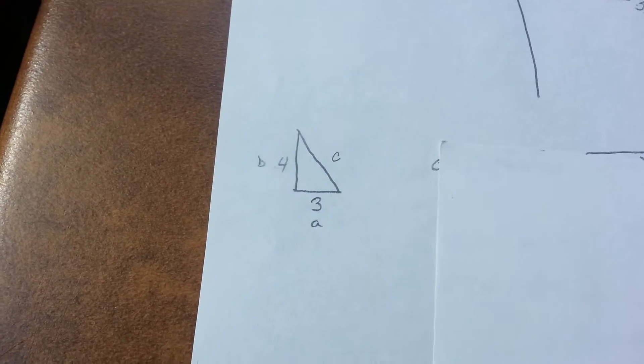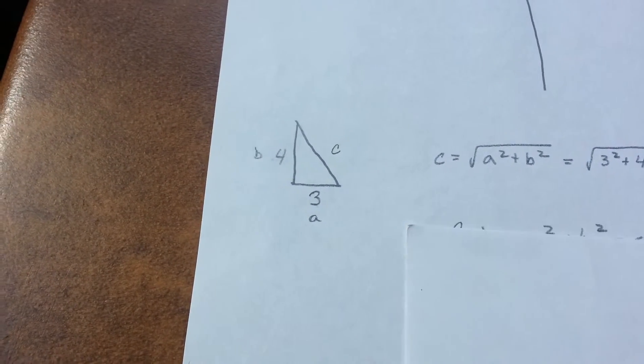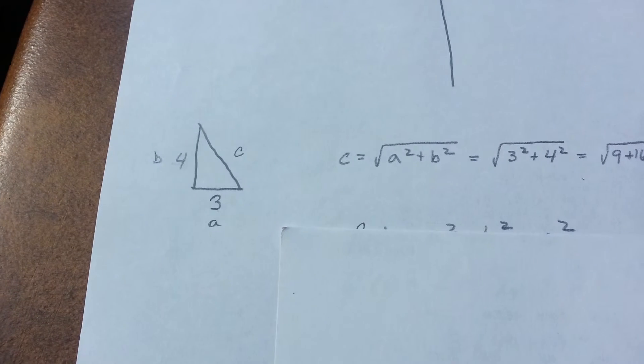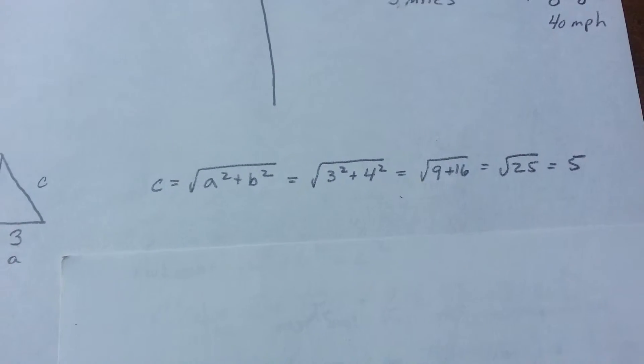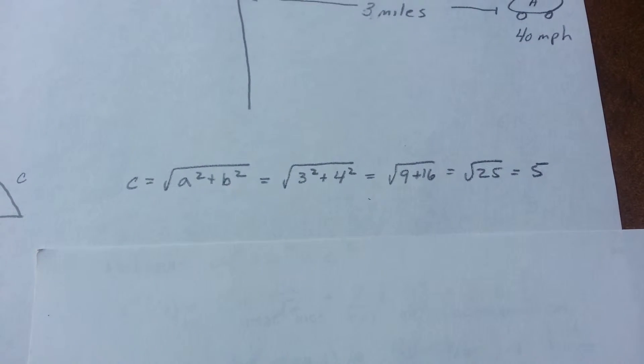To do that, we use our formula A square plus B square equals C square. Plug in 3, 4, all the way through until we came up with C, which is 5.